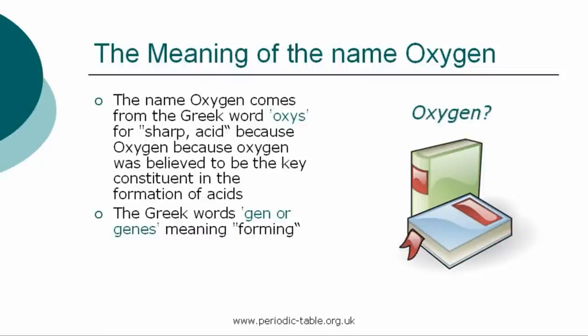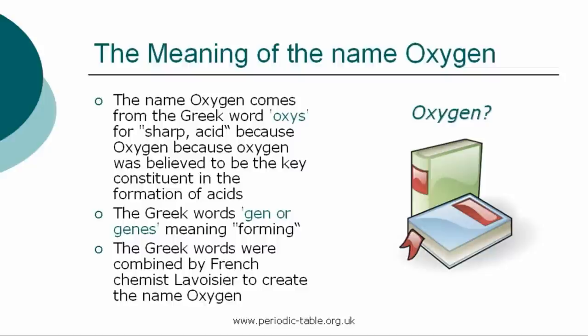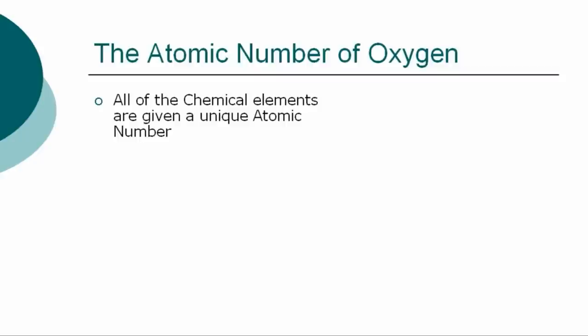French chemist Antoine Laurent Lavoisier originally thought that oxygen was an acid producer because by burning phosphorus and sulfur and dissolving them in water, he was able to produce acids.